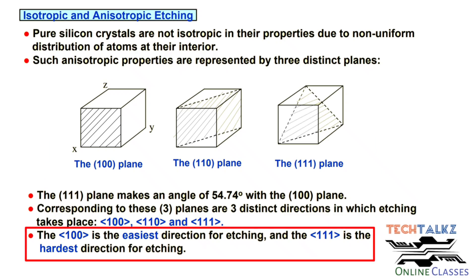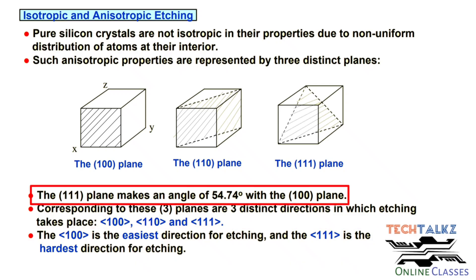There are different etching rates for each plane. The 1-1-1 plane is the hardest to etch, with a much lower etching rate compared to the 1-0-0 plane. The 1-1-1 plane makes an angle of 54.74 degrees with the 1-0-0 plane.